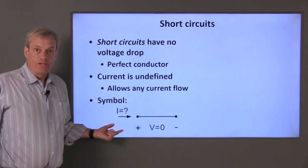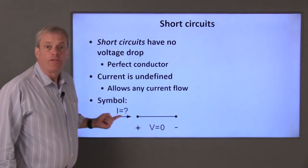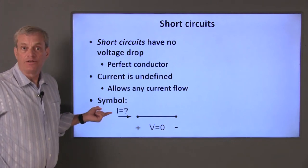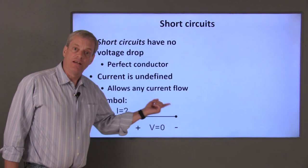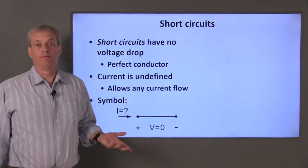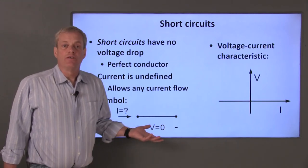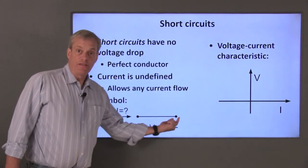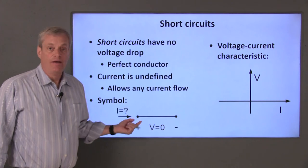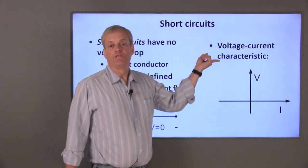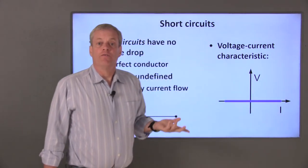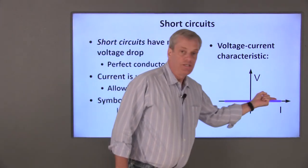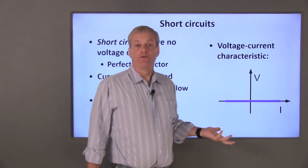The voltage difference across a short circuit is zero, but the current that flows through it is not defined. The current through the conductor is set by the other circuit elements connected to the short circuit. We mathematically model all circuit elements by the relationship between voltage and current at the element's terminals — this relationship is called the voltage-current characteristic. For a short circuit, the voltage equals zero for any value of current.